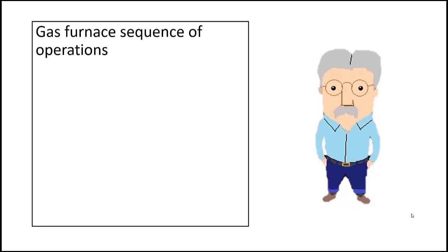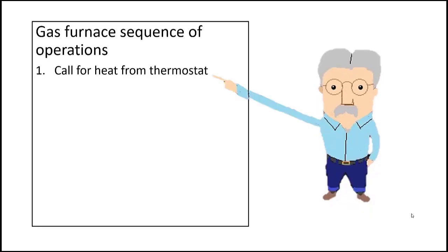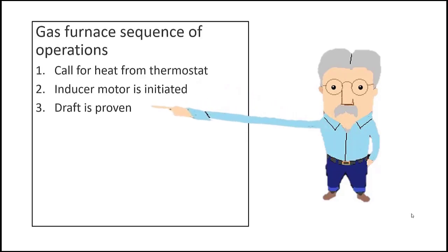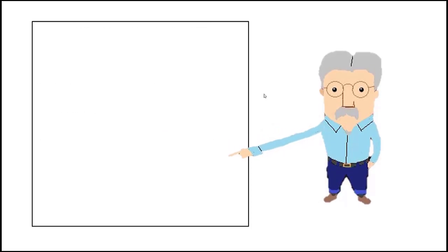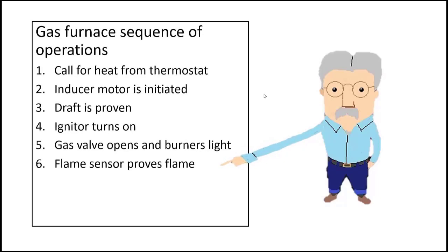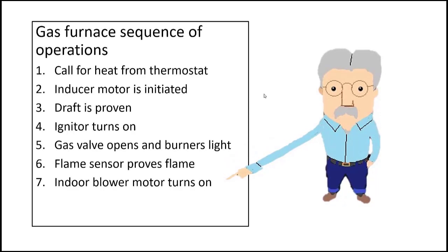So let's go over that basic sequence of operation. The first is a call for heat from the thermostat. That starts all action. The draft inducer motor starts. Then draft is proven. The igniter turns on, and that could be a hot surface igniter or a pilot. The gas valve opens and the burners light. But then we have to prove there's flame. The indoor blower turns on. And we have a happy customer. So that's the basic sequence of operation.